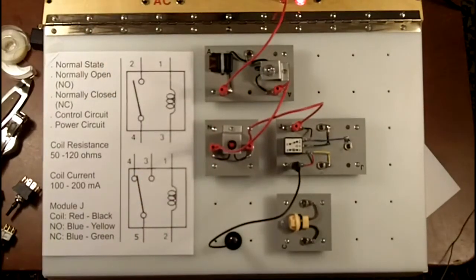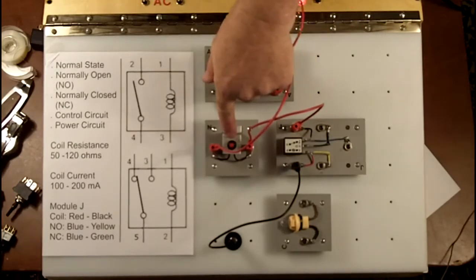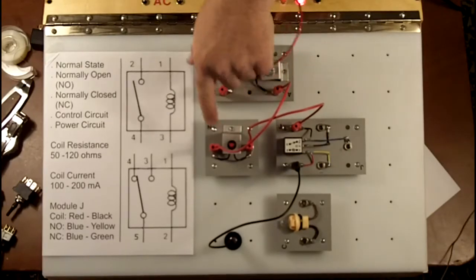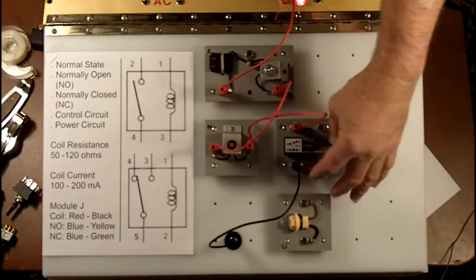Now at this point, I've wired in the control circuit. We're going through a momentary push button switch, which is a control for the relay. And then the relay's load, which is the winding, red, black, to ground.